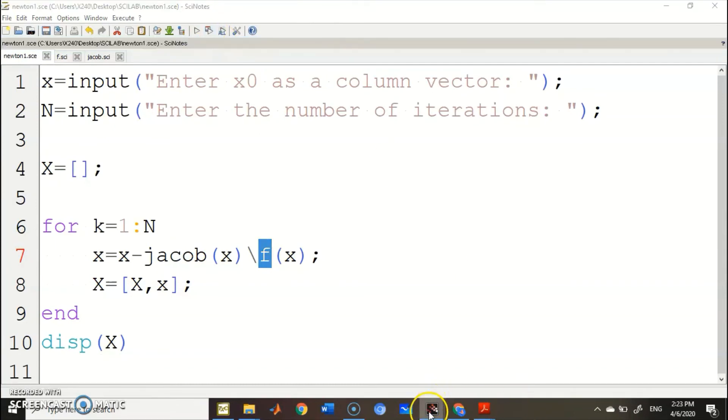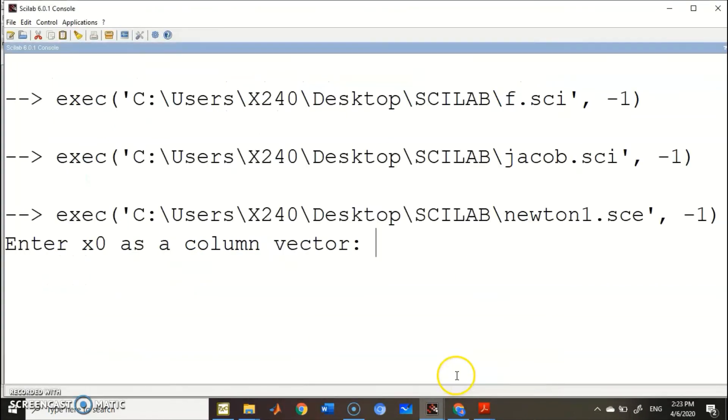Go to the console. It says here, enter X0 as a column vector. So enter the column vector: 3 over 4, space, 3 over 4. I put a transpose here.